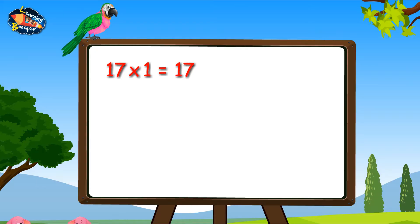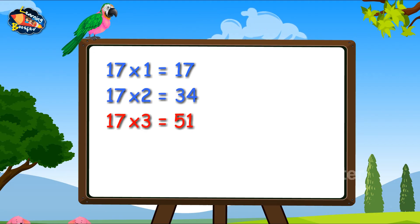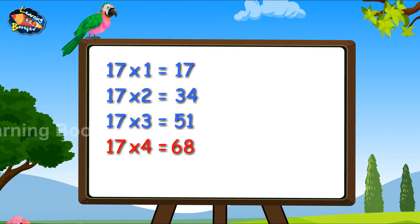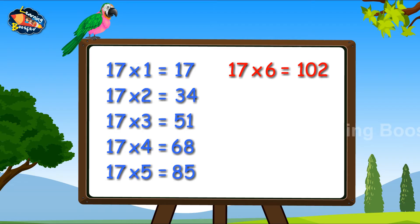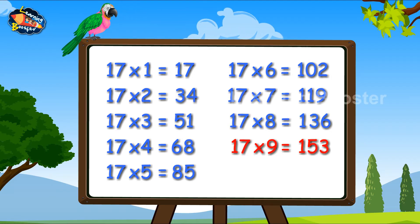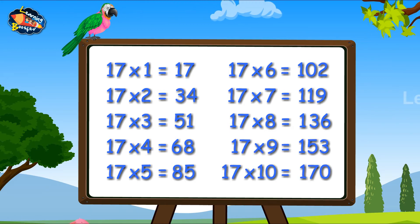17 1s are 17. 17 2s are 34. 17 3s are 51. 17 4s are 68. 17 5s are 85. 17 6s are 102. 17 7s are 119. 17 8s are 136. 17 9s are 153. 17 10s are 170.